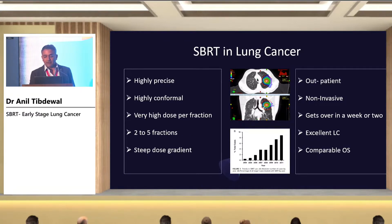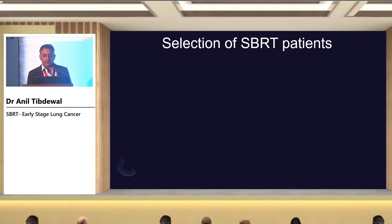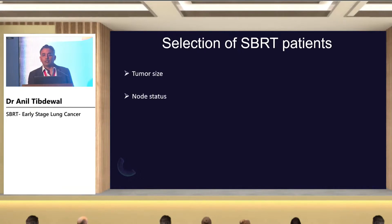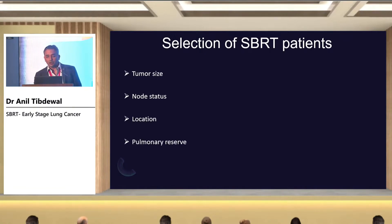The rate of SBRT in early stage lung cancer has been increasing continuously since the last two and a half decades. How do you select patients for SBRT in early stage lung cancer? Key considerations are: tumor size, nodal status, location of the tumor — whether right-sided, left-sided, upper lobe, lower lobe, or close to central structures — pulmonary reserve, and operability. If the patient is medically inoperable, SBRT is the gold standard.